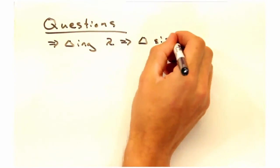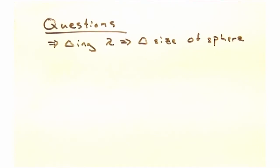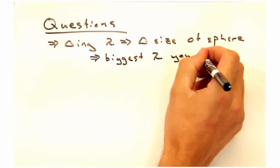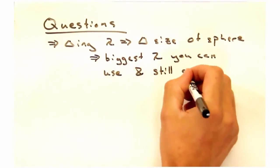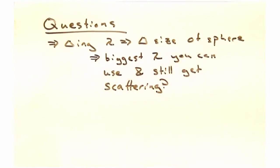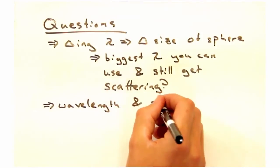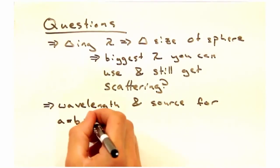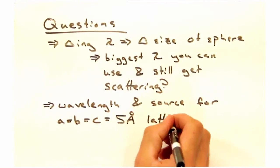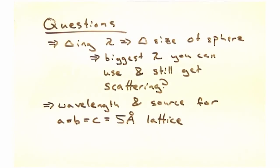First, we mentioned before how changing the wavelength of the source can change the size of the Ewald Sphere. What is the biggest wavelength you can use and still get scattering? And what wavelengths and corresponding sources would you expect for diffraction of single crystals with real space lattice spacing of about 5 angstroms?